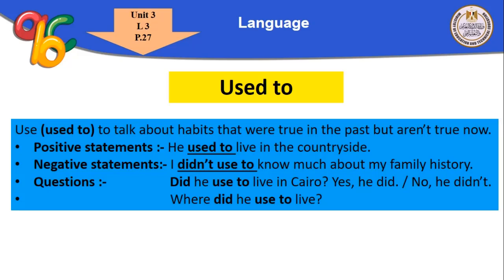For Wh-questions about place: 'Where did he use to live?' — In Cairo. So 'used to' is used when we speak about habits in the past that we don't do anymore.